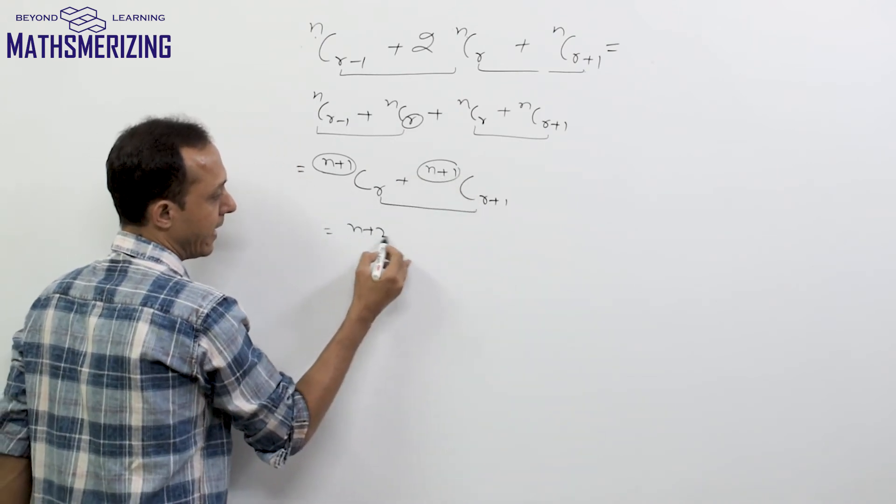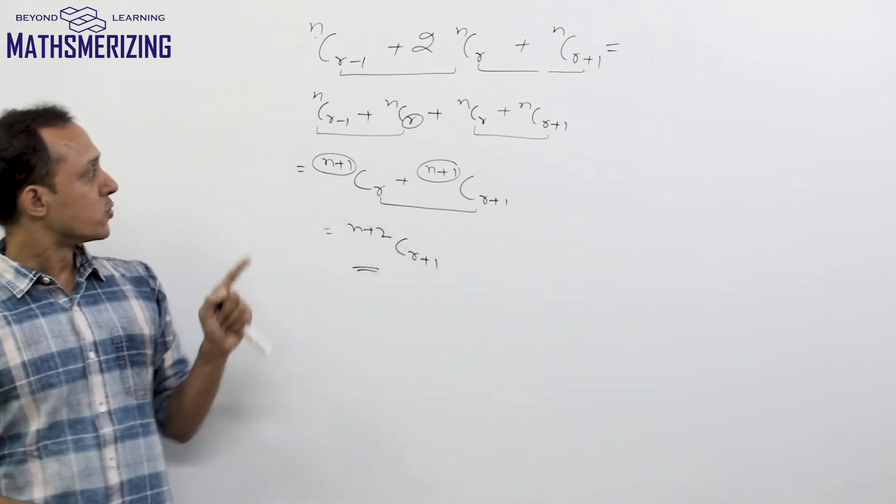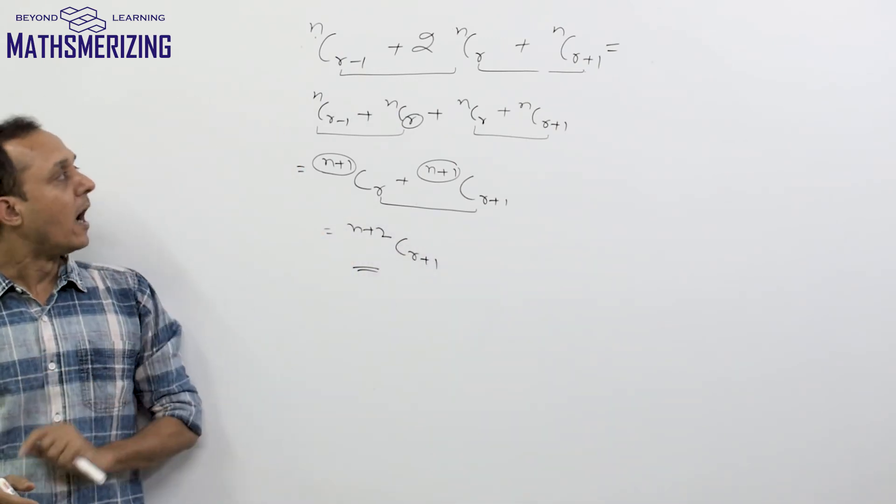So it'll be nothing but n+2Cr+1. The answer to this question is n+2Cr+1.